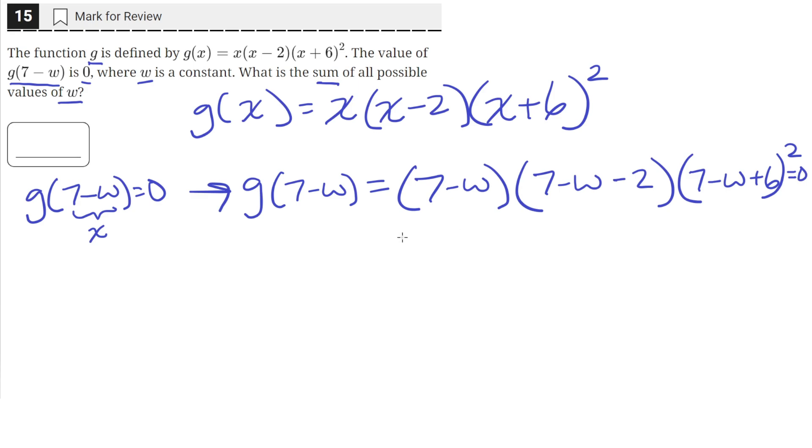Okay, so let's simplify this down. So we'll have 7 minus w in this first parenthesis, and in the second one, 7 minus 2 is equal to 5 minus w. And then in the third parenthesis, 7 plus 6, that's 13 minus w whole squared equals 0.